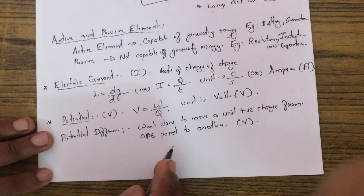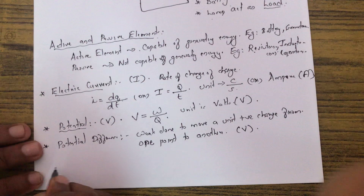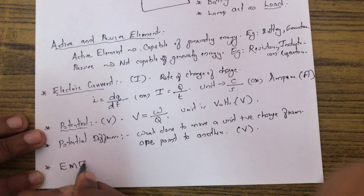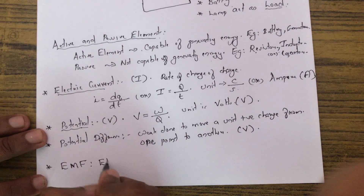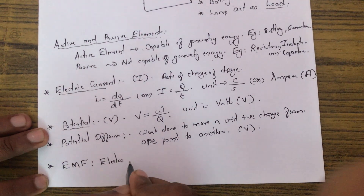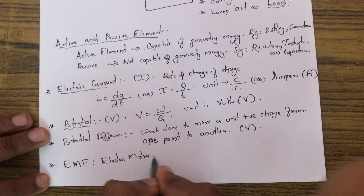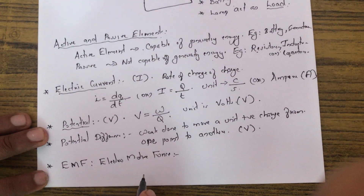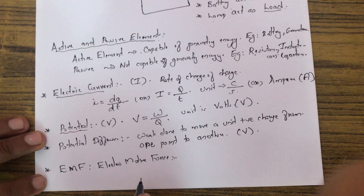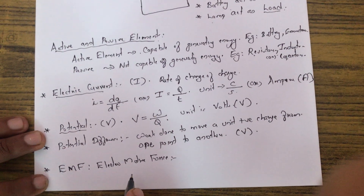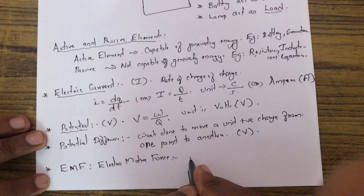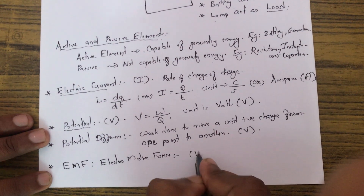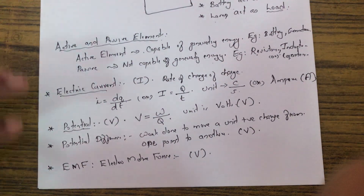Next is EMF — electromotive force. It is the force which causes current to flow in an electric circuit. Its unit is also volts.